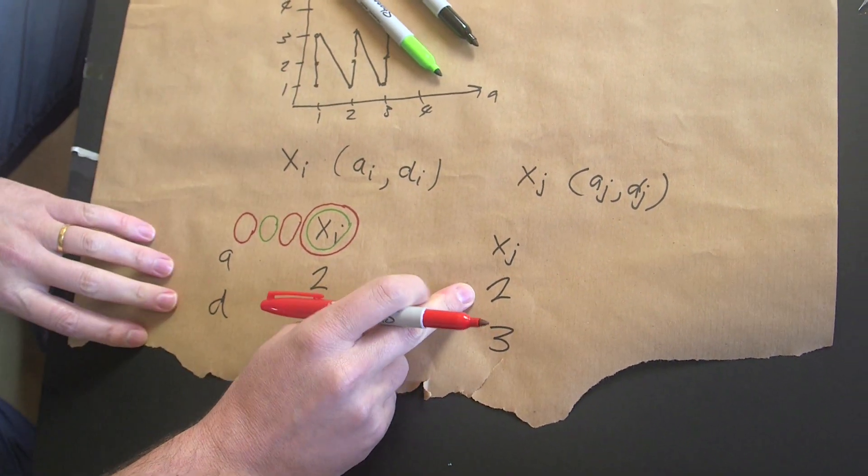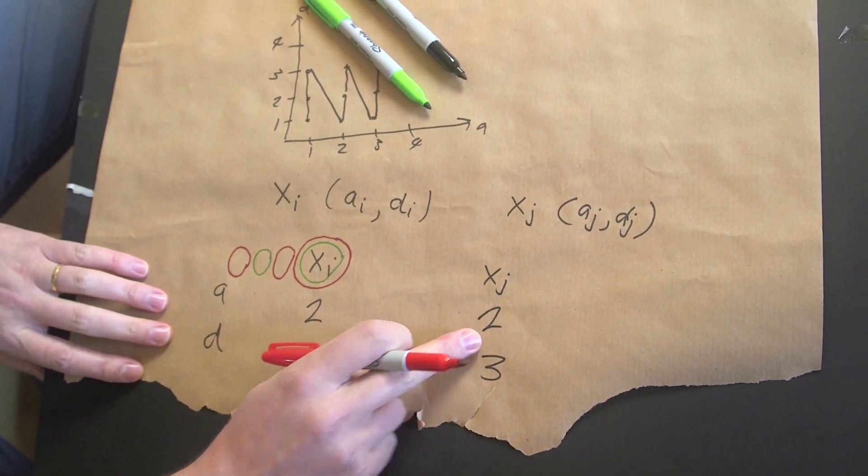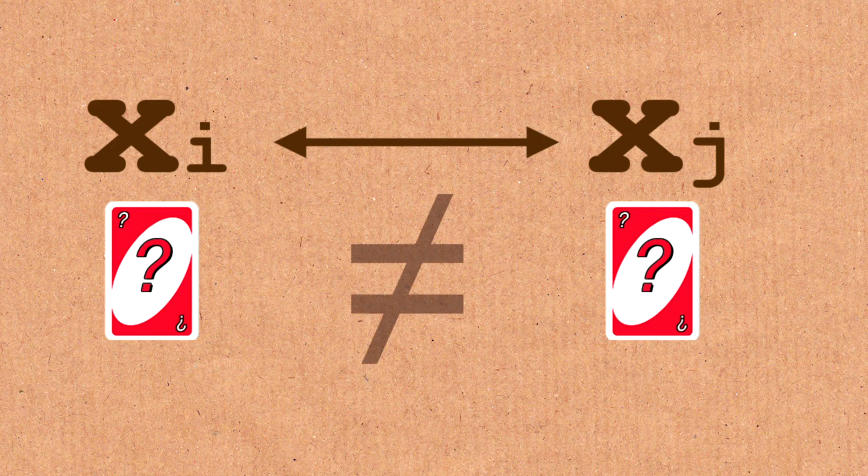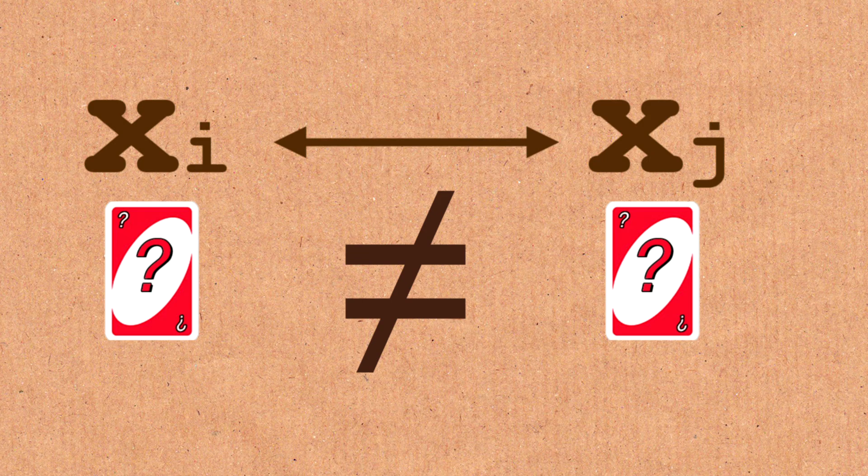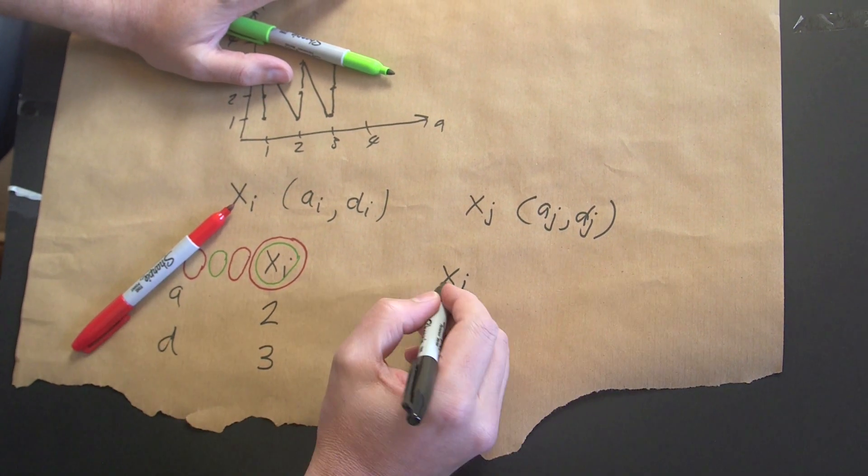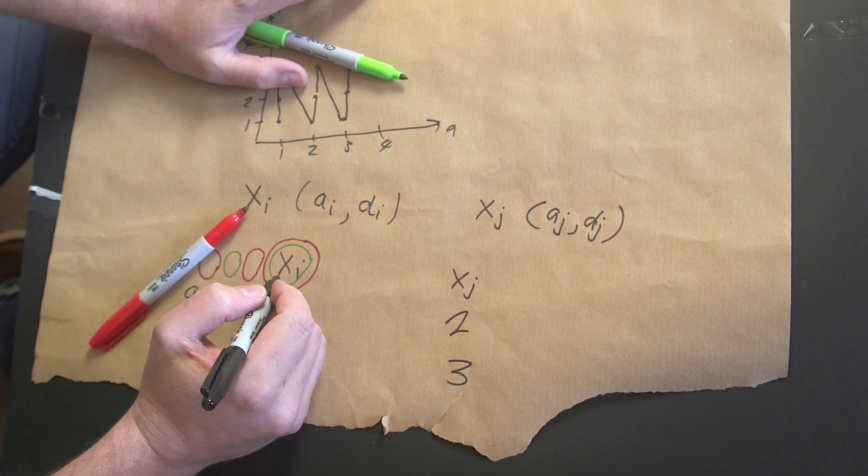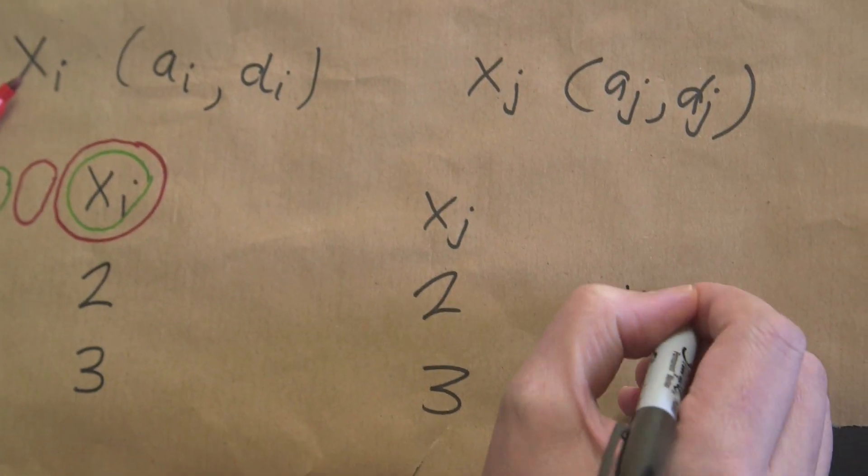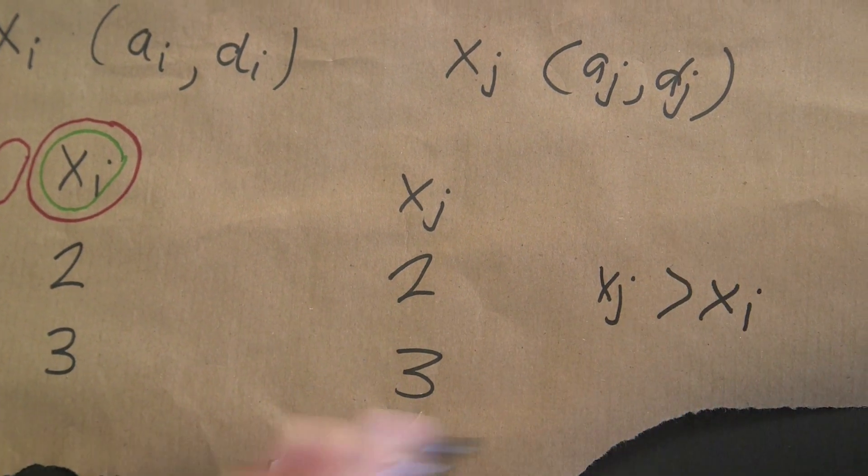But now if we look over here, we've got xj. But because all these numbers have to be different, and that was an important point, there's really two things that could happen: xj could either be greater than xi or less than xi. So let's say xj is greater than xi, which is fine. We can assume that.